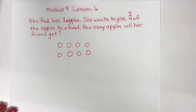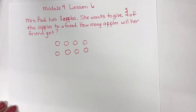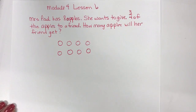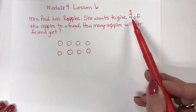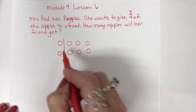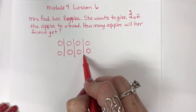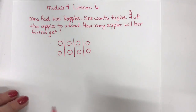And I need to divide my array into four equal parts because the denominator of my fraction is four. So I'm going to divide it. Here's one part, two parts, three. So now I have four equal parts.